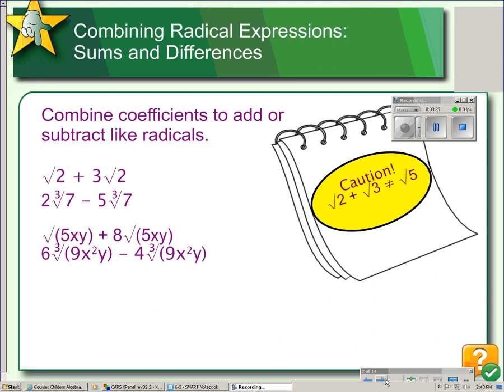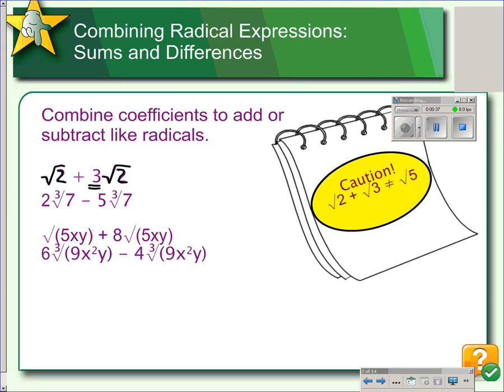You never add the radicands. So, in this first example, we have square root 2 and square root 2. Matching indices, matching radicands. So, what we'll do is add the coefficient of 3 plus this unwritten coefficient of 1. So, that gives us 4 root 2. In the second example, we have cube root of 7 and cube root of 7. Those are matching. So, we can do 2 minus 5, which gives us negative 3, and then the radical stays the same, the root of 7.